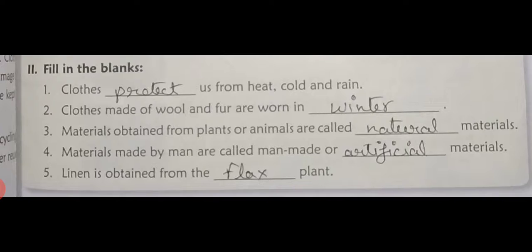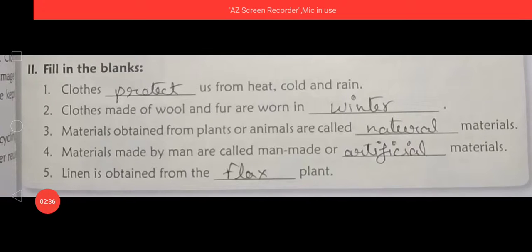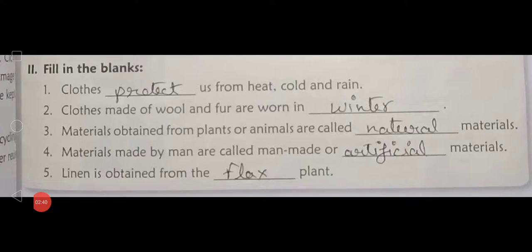Number three: Materials — M A T E R I A L S — obtained — O B T A I N E D — from plants or animals are called natural — N A T U R A L — materials. Full stop.